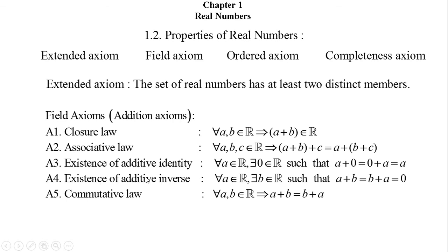For the closure law, if we consider two real numbers a and b, then their sum will also be a real number. For the associative law, if a, b, c are real numbers, then (a + b) + c equals a + (b + c).